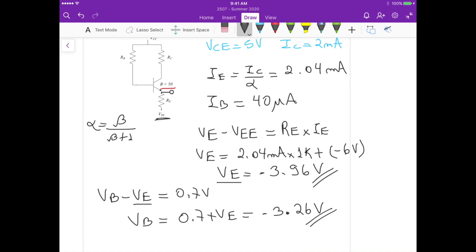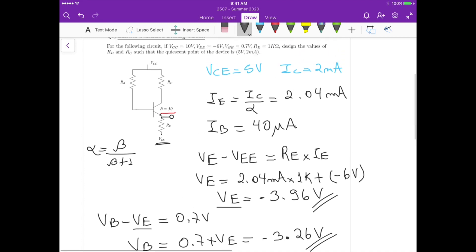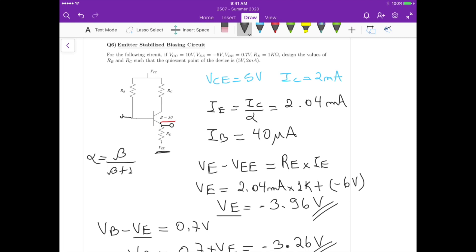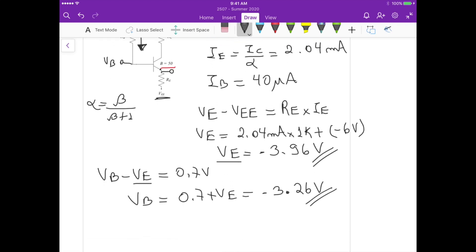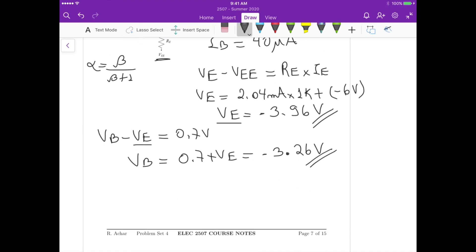Now that we know VB, we can actually calculate the value at the base resistance. So because we know the potential here, we also know the potential here, that's VCC. And this is VB. We know the current that's flowing here, it's the 40 microamperes that we calculated using beta and the collector current from the Q-point. So we can determine what should be the value of the base resistance in order to get that specific current flowing at the base. So we can calculate that RB is going to be equals to VCC minus VB divided by the base current.